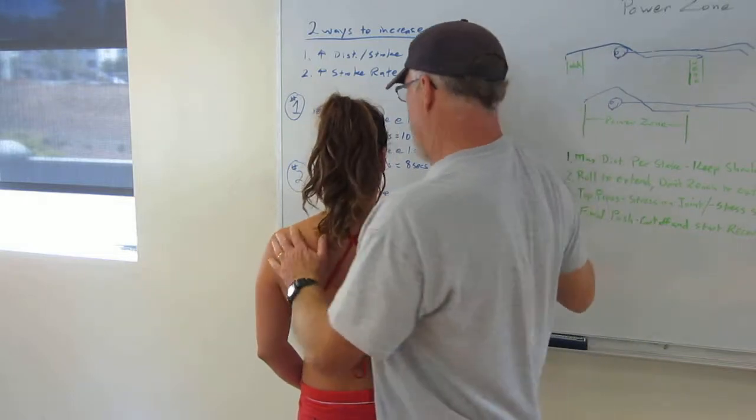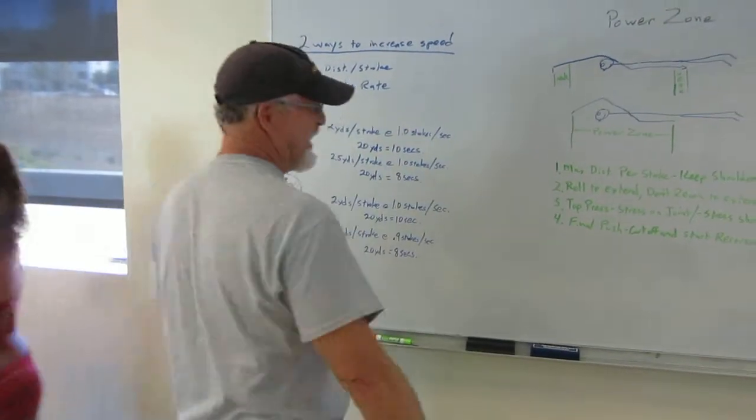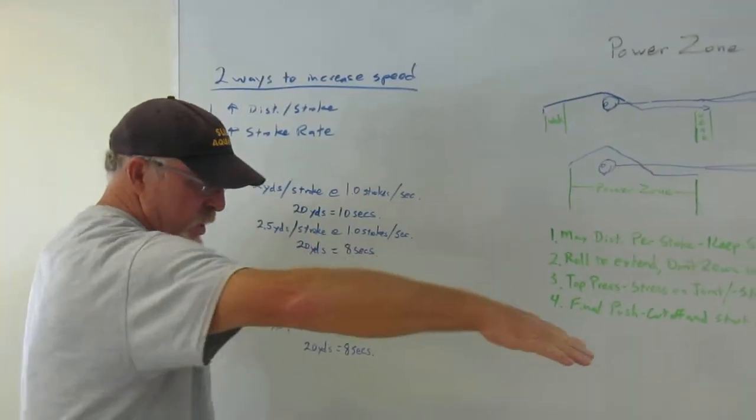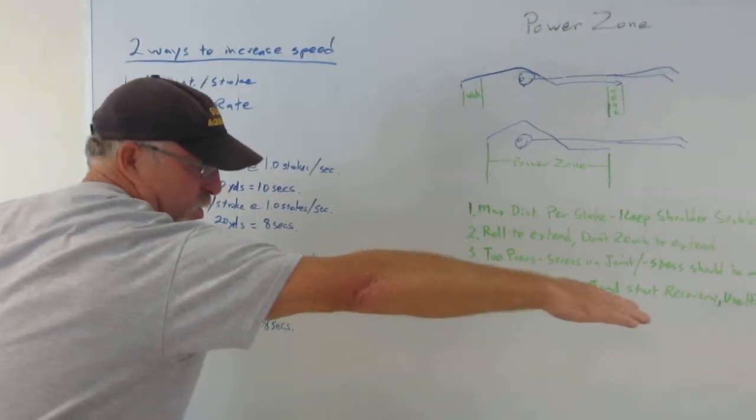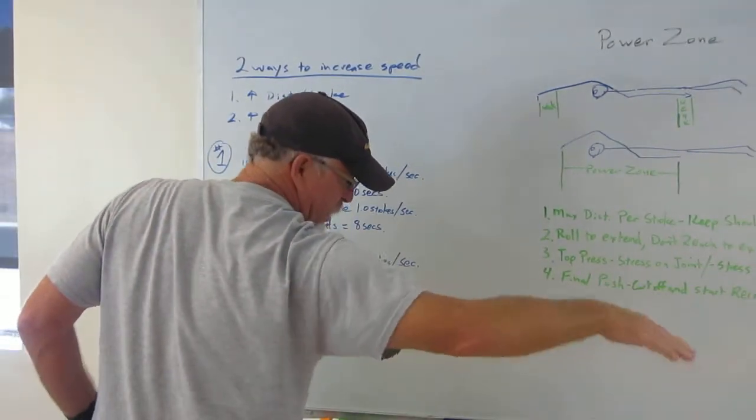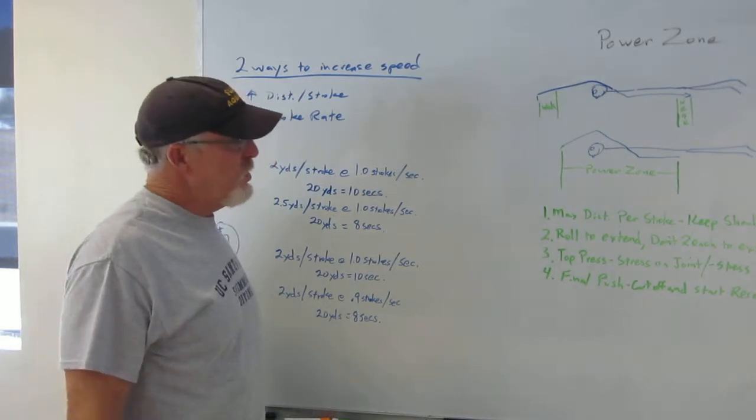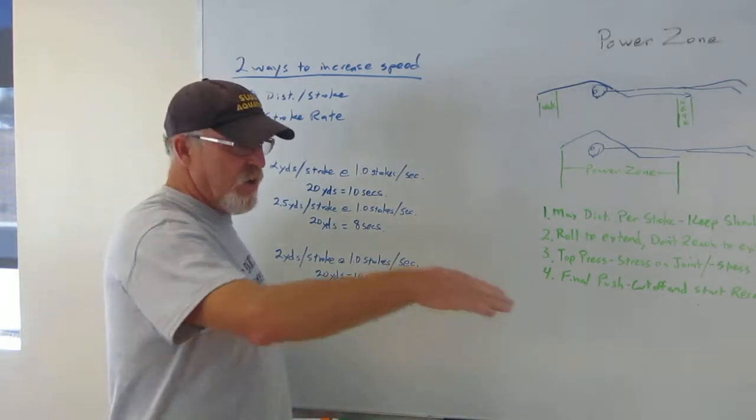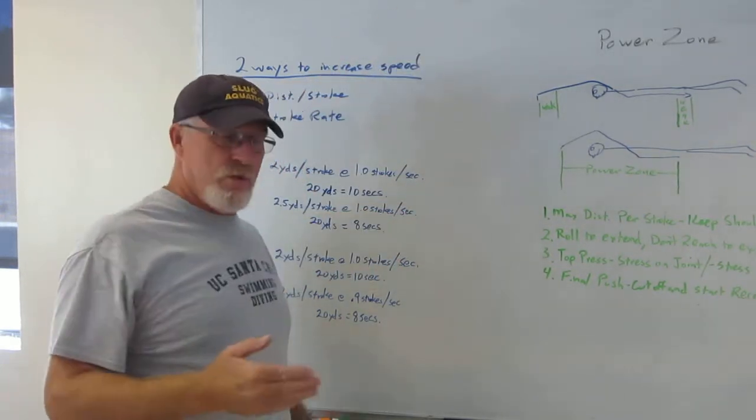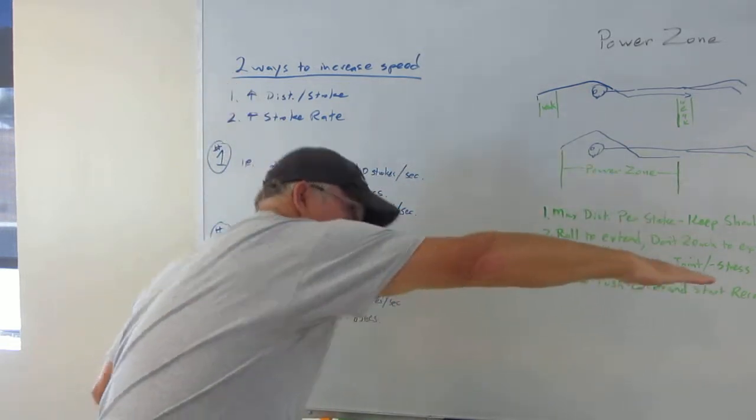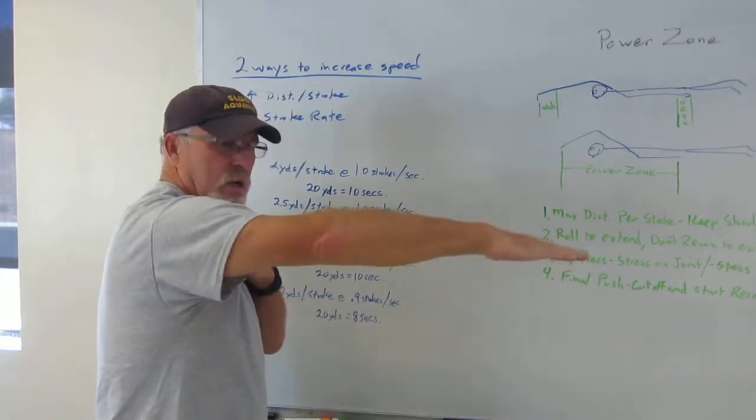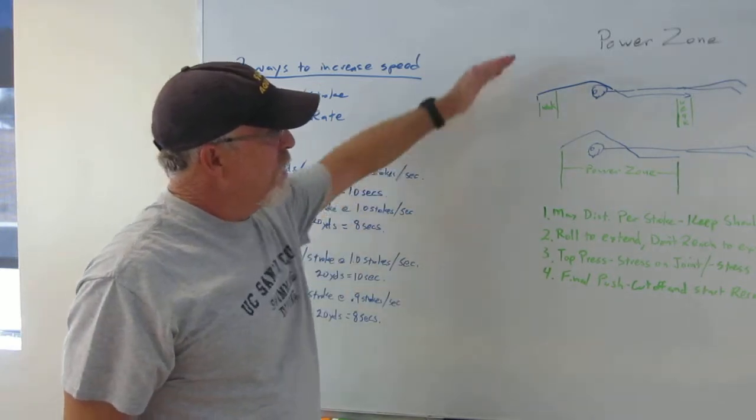Now what she wants to do is she does want to extend in front, but as the hand is coming forward, she doesn't want to disconnect the shoulder to overreach. She wants to roll the shoulder and roll the hips to get the extension out in front as she gets the fingertips down. So, that's the correct way to do it and it's really hard when you're dealing particularly with age groupers or swimmers trying to deal with the first time is they'll overextend and as they begin to press out on top, they put all the stress right on the shoulder, right on the rotator cuff.